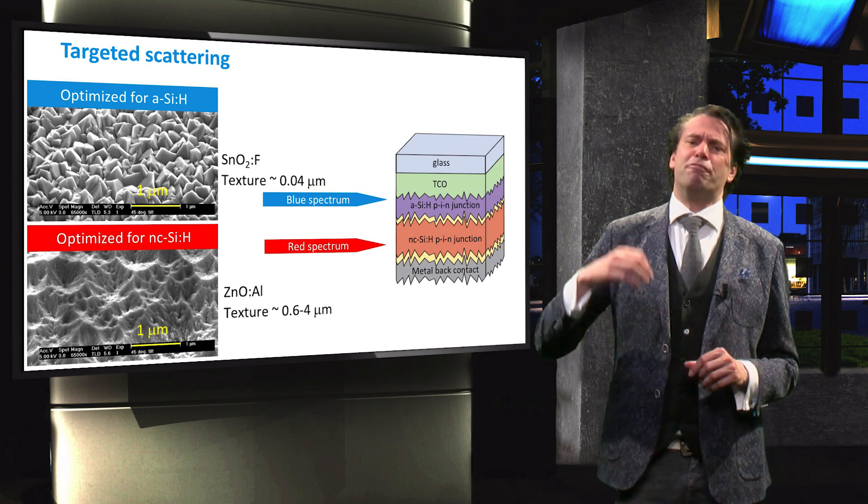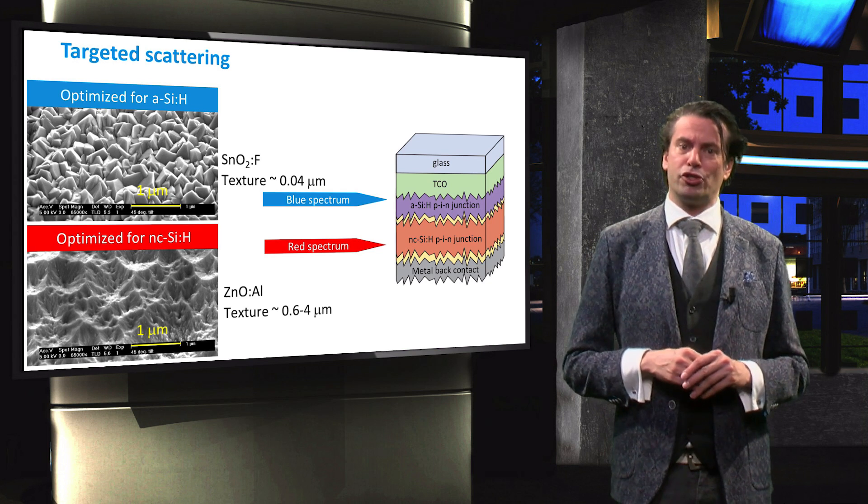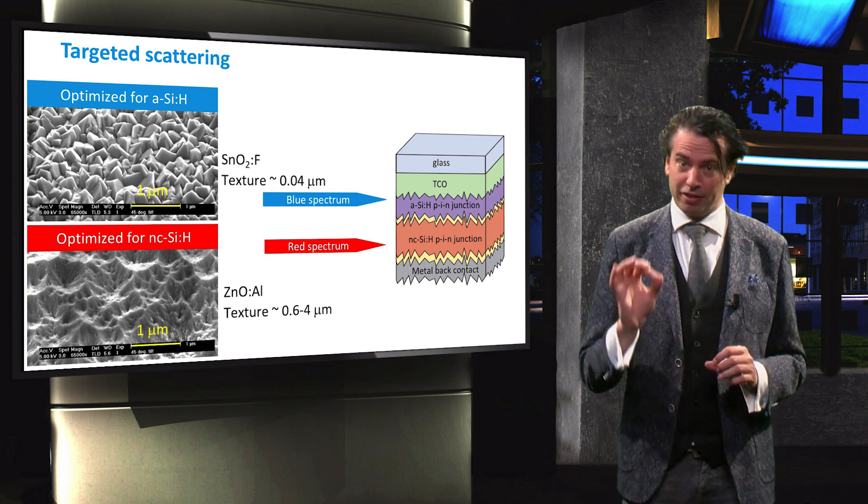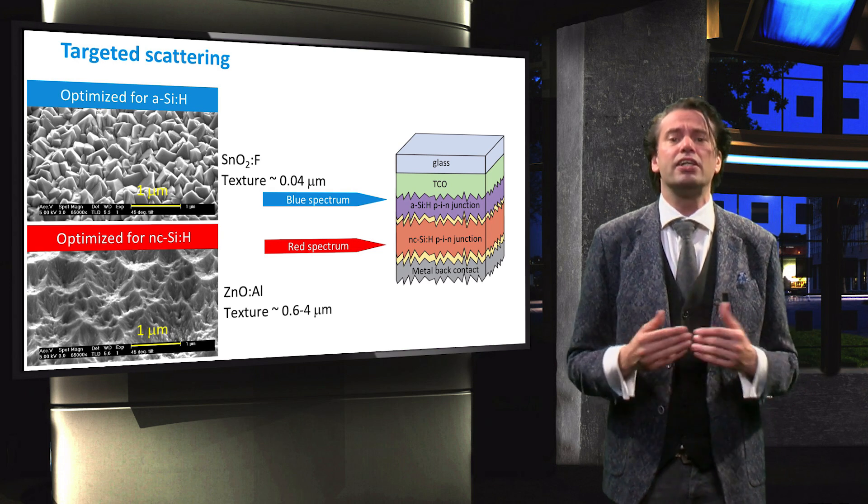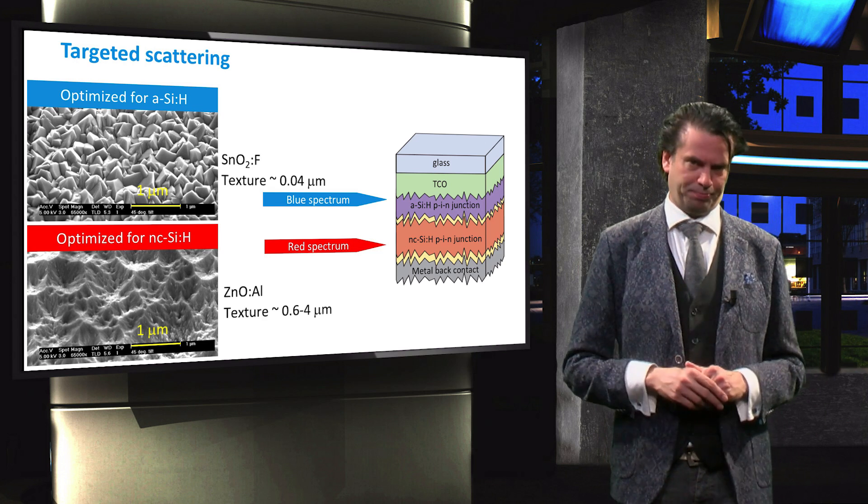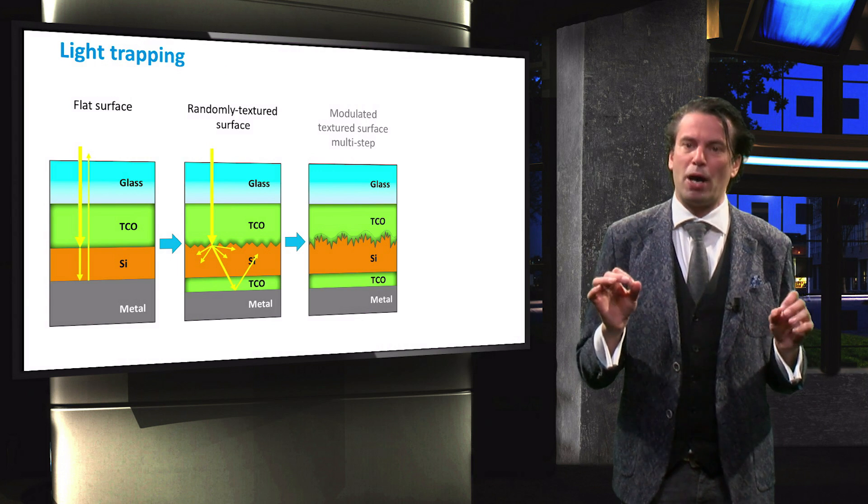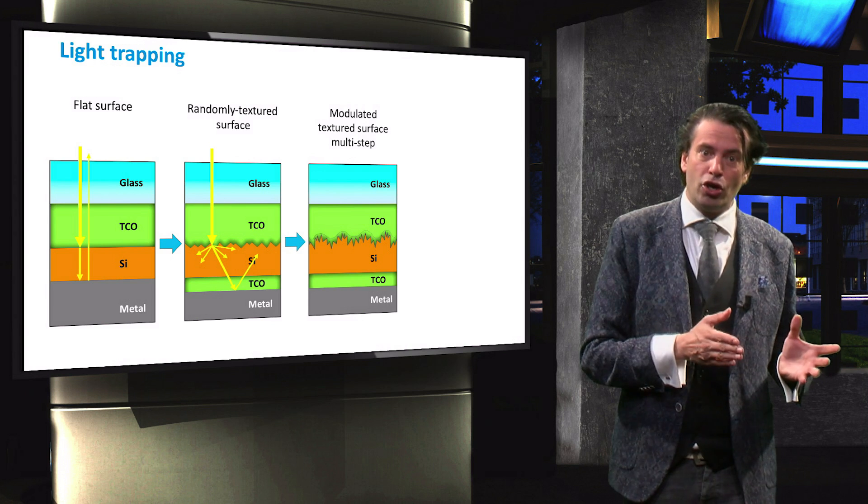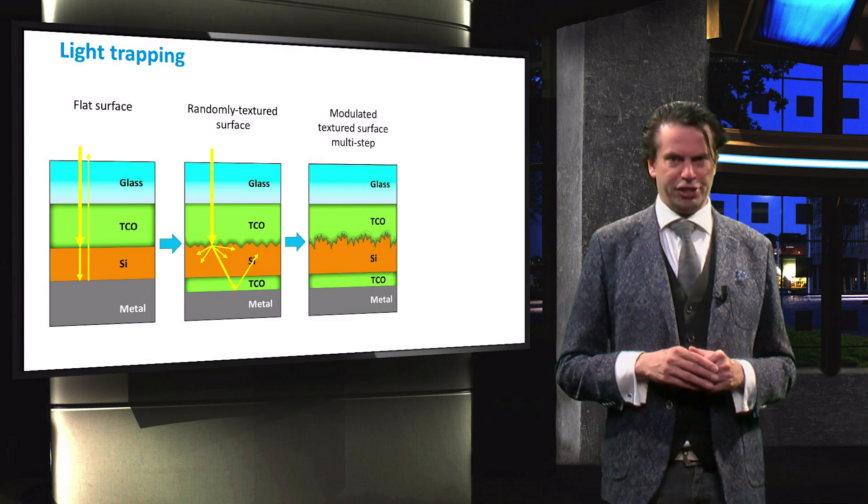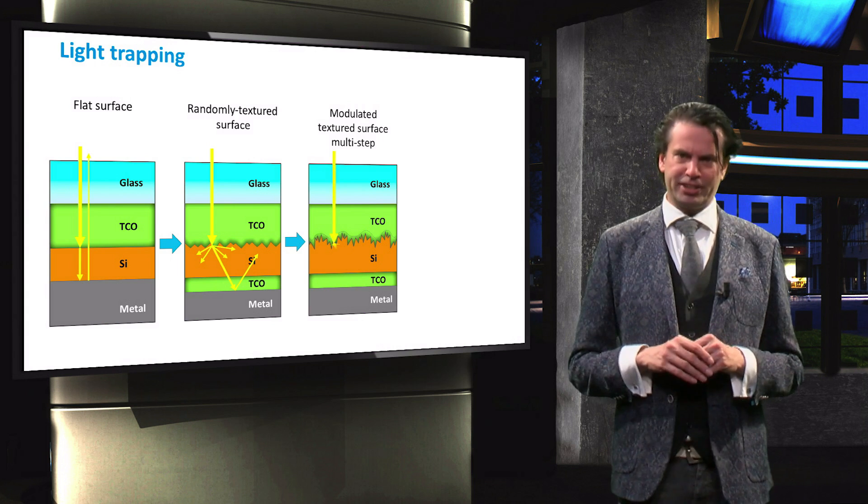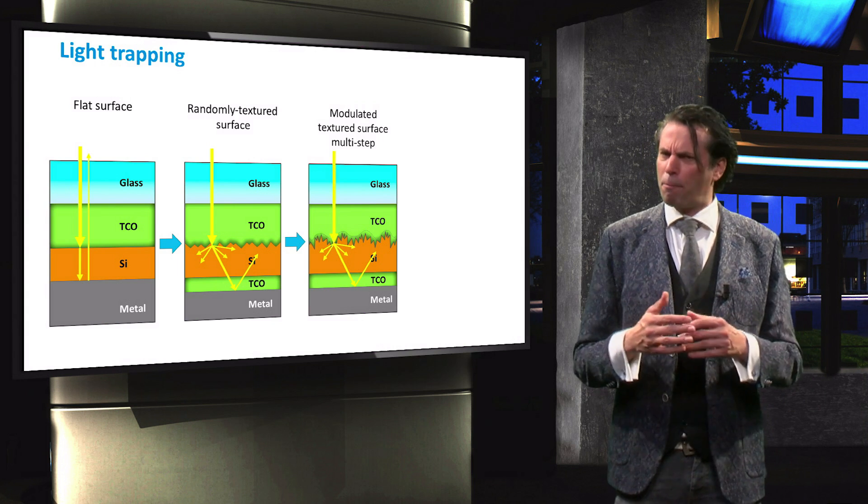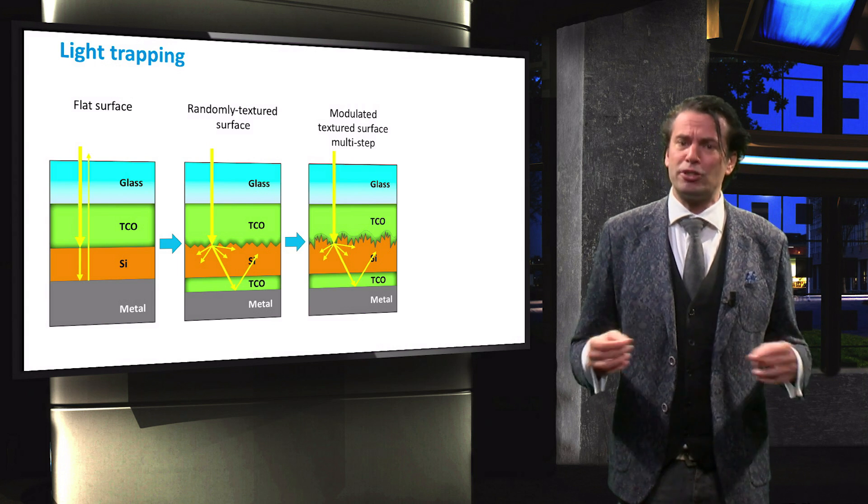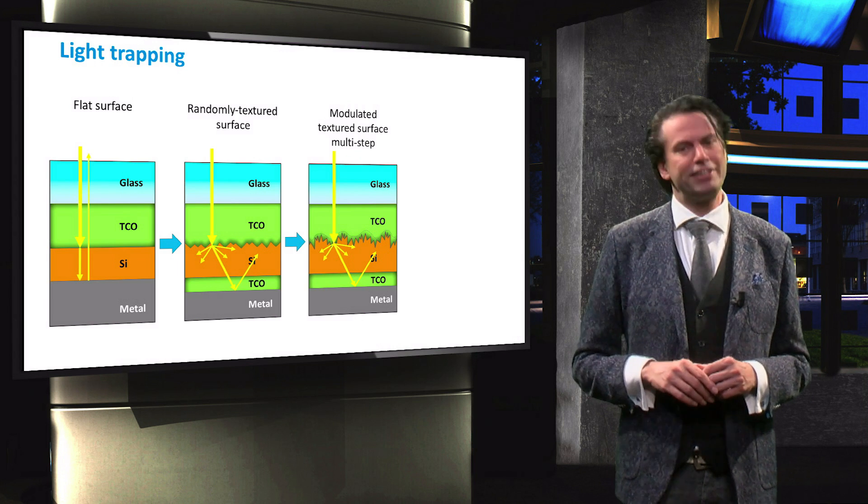However, if both the amorphous silicon and nano-crystalline silicon junctions are combined in a tandem cell, more than one scale of texture at the various interfaces is required to facilitate the light trapping in the bottom and top cell. Therefore, a multi-step approach needs to be employed to produce small-scale texturing features on top of large-scale texturing features. Such a modulated surface texture effectively scatters light for a broad wavelength range. Various different approaches have been developed to integrate this multi-scale texturing into a micromorphed tandem cell.